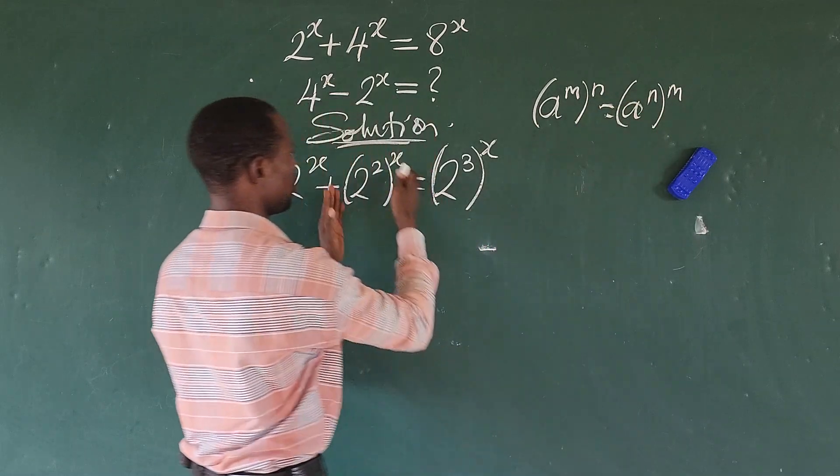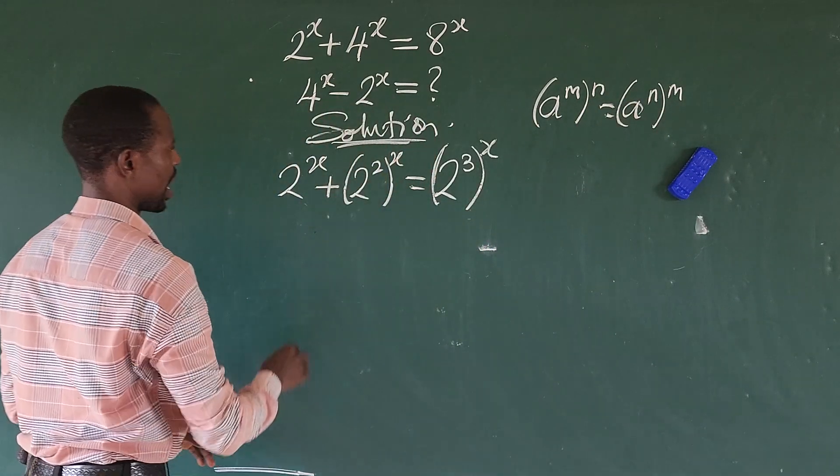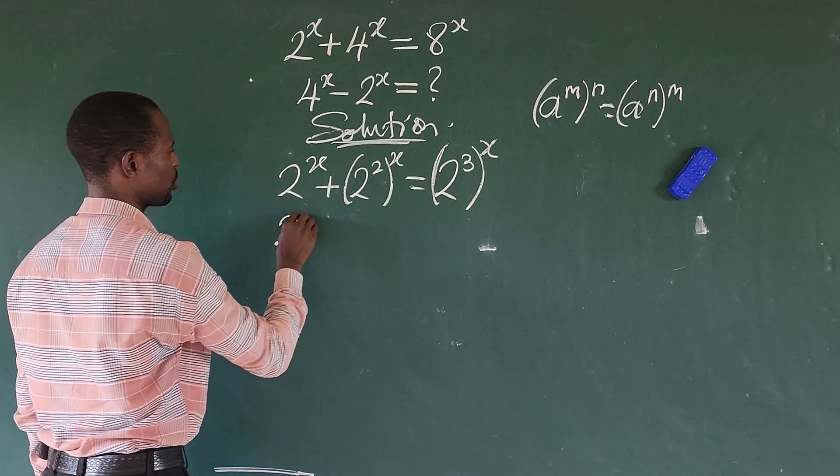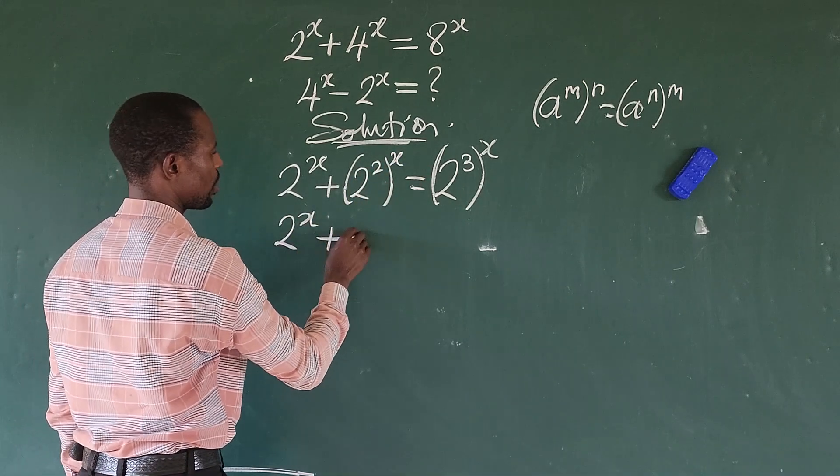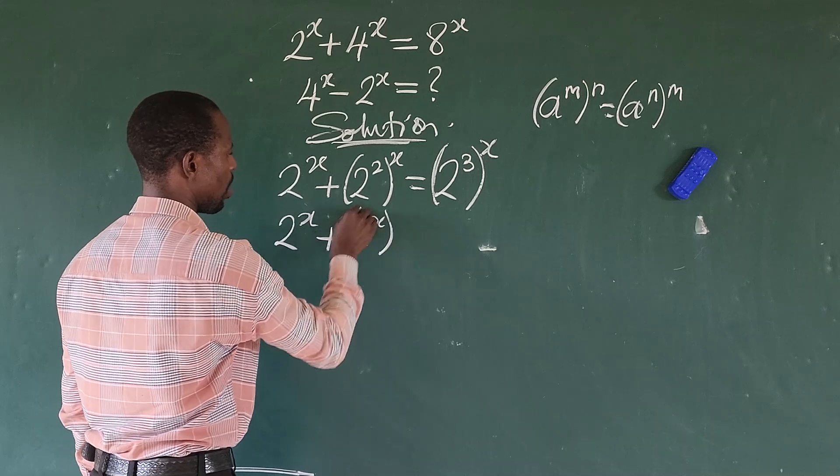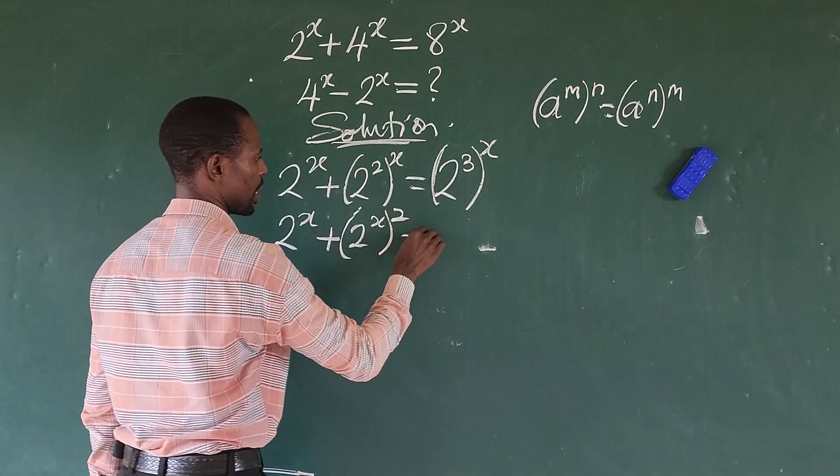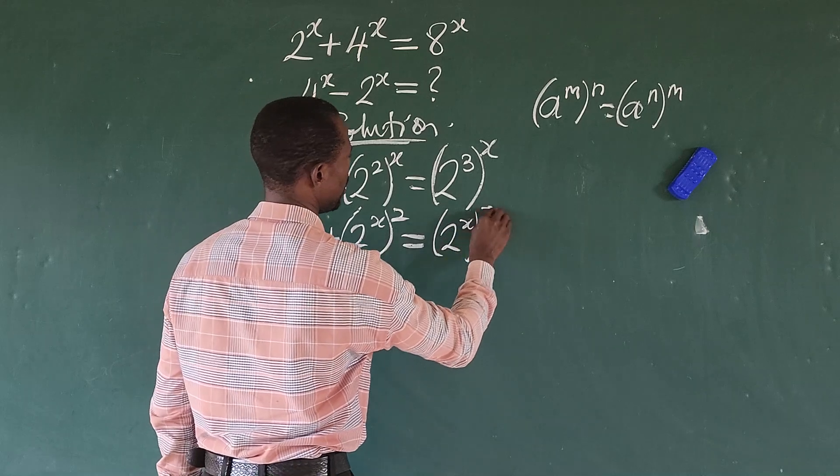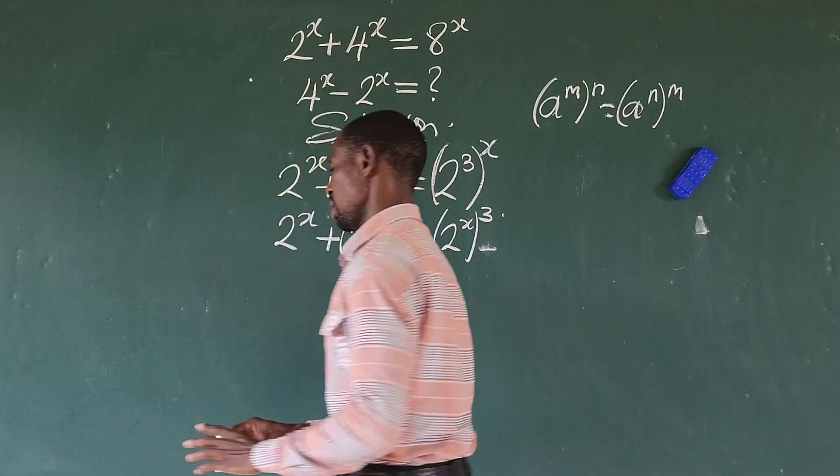From here, we can equally apply that to this step we have here. Let's bring this out and shift this in. So this is going to give us 2 to the power of x plus 2 to the power of x to the power of 2 equals 2 to the power of x to the power of 3.